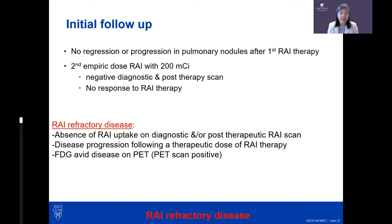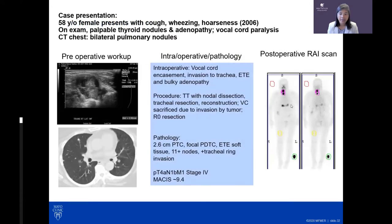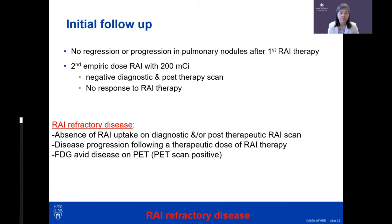A second dose of radioactive iodine was also given, but there was no response in the lungs. This outcome could have been predicted by the negative scan findings. In most patients — except young patients — lung disease that doesn't take up iodine on a diagnostic scan often doesn't respond to empiric doses. Radioiodine refractory disease is defined as: absence of iodine uptake on pre- or post-therapy scan, disease progression after a therapeutic dose, or FDG-avid disease on PET scan, which predicts less radioiodine-responsive disease.